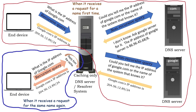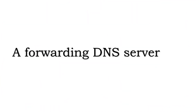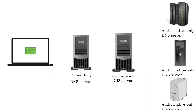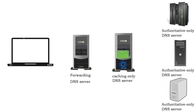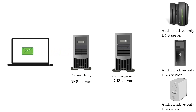Since it stores answers in the cache and uses them to resolve names, it is called a caching-only DNS server. A forwarding DNS server is also a caching-only server, but it does not resolve queries. It forwards them to the next caching-only server in the hierarchy. The caching-only server communicates with configured DNS servers and resolves queries. It saves the answers in the cache and replies to the forwarding DNS server, which also caches the result and replies to requester systems.